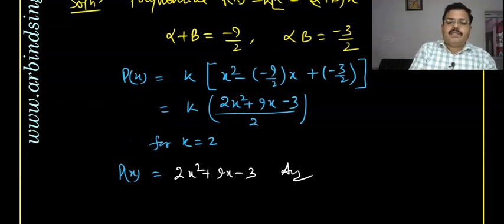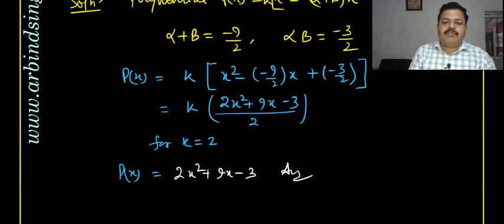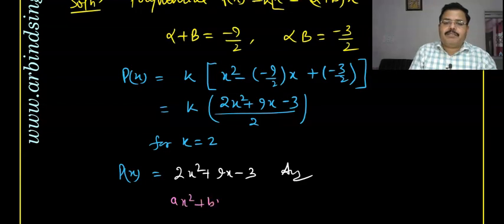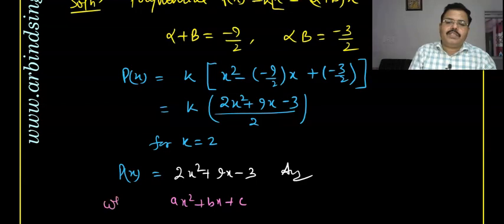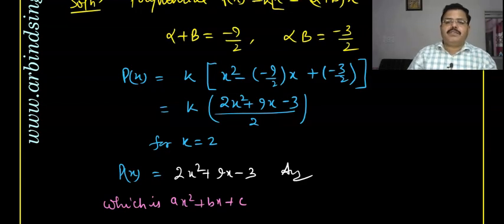One thing to realize: I am always writing k = 2 or k = 1 in such a way that the denominator terms cancel out and no fraction remains. This is because a polynomial is always in the form ax² + bx + c, where a, b, c are constants — that is why I write it this way.